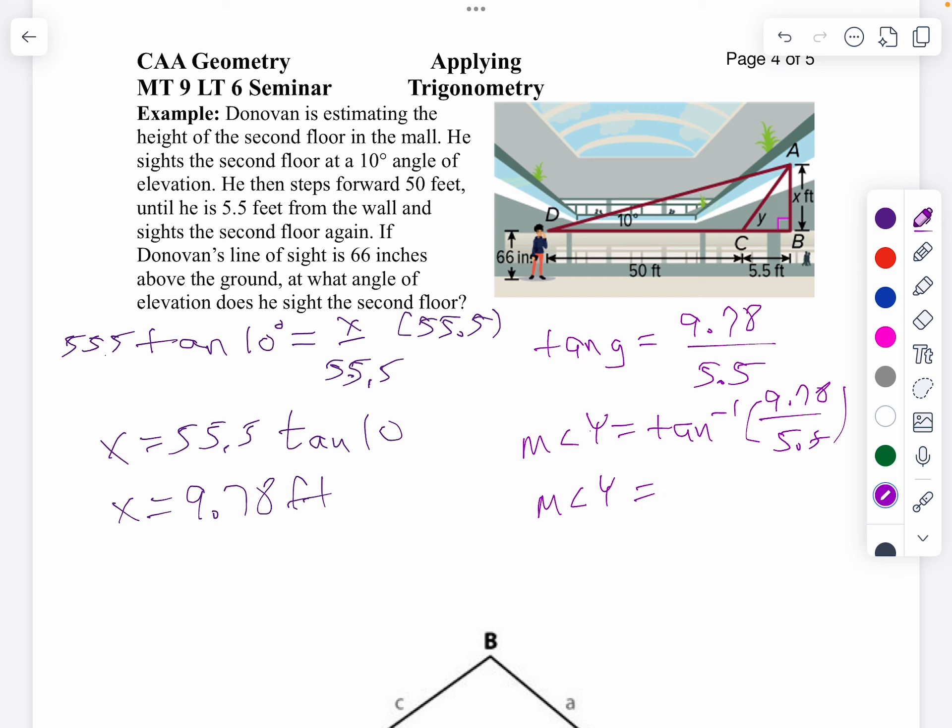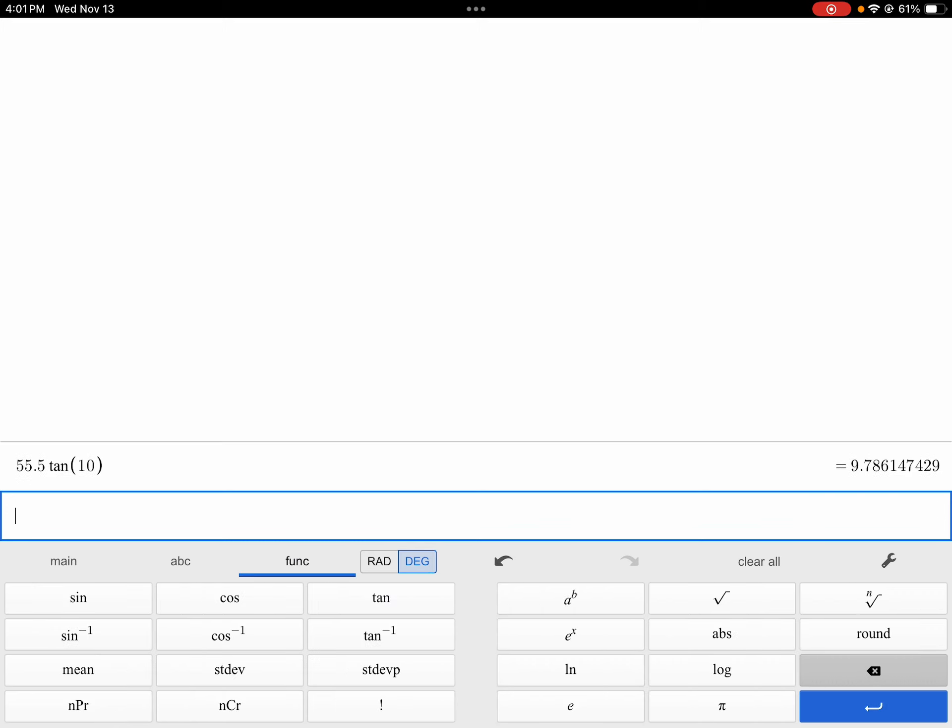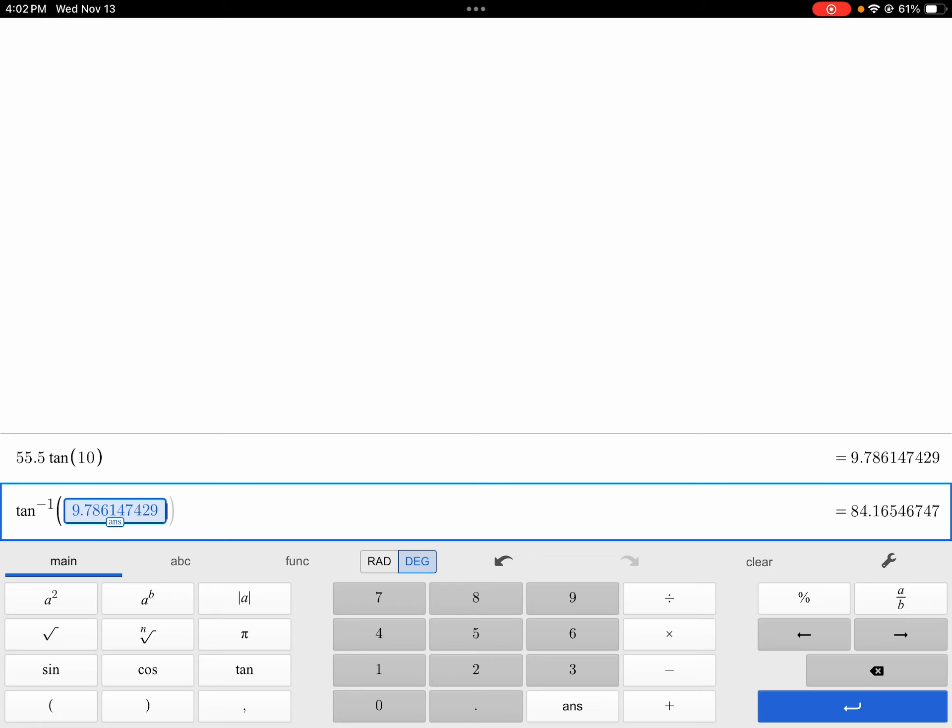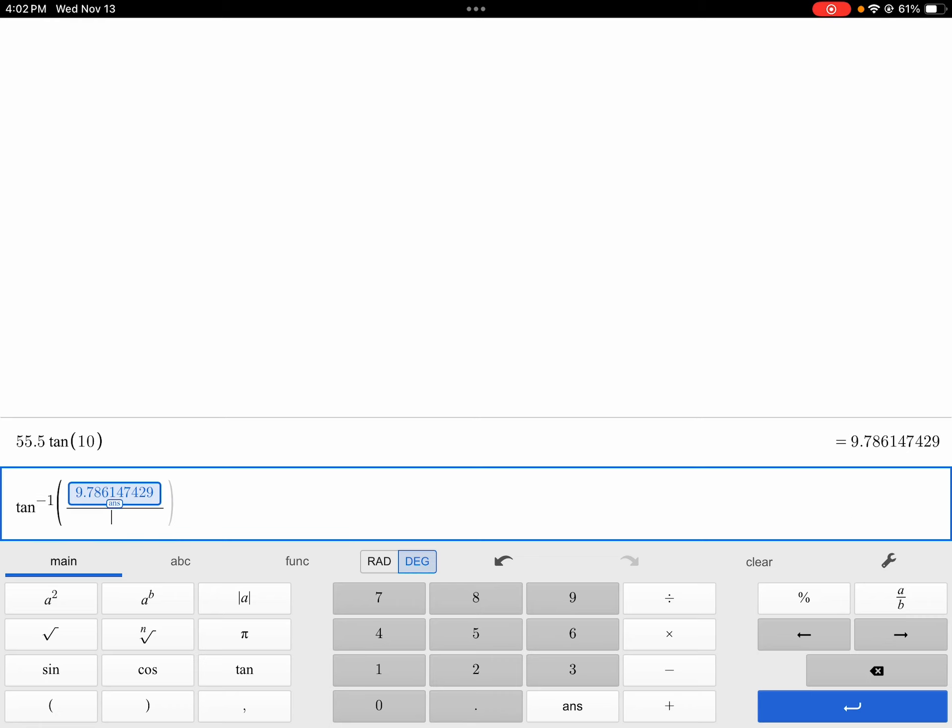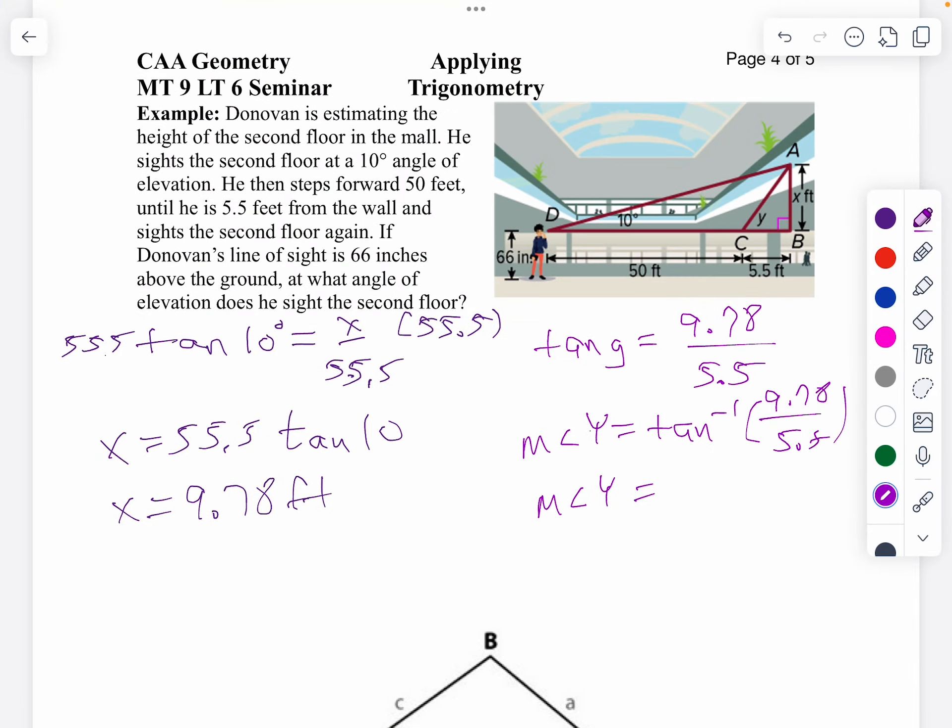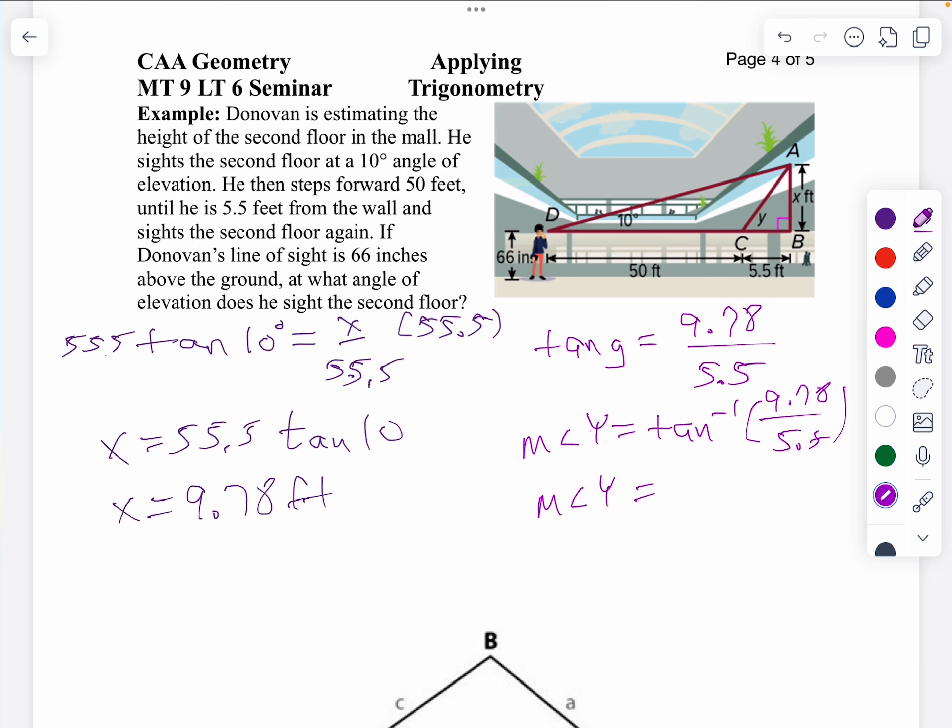Let's go ahead and do that. We're going to say the inverse tangent of 9.78, and I'm going to divide that by 5.5. I'm going to double-check I had 5.5 in there—yes, 5.5. So then the angle is about 61 degrees.